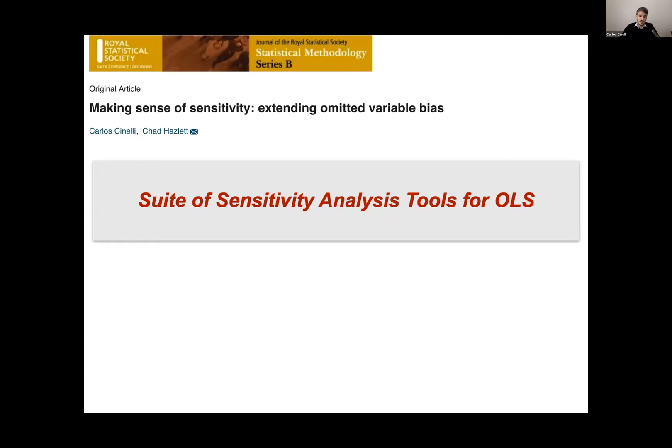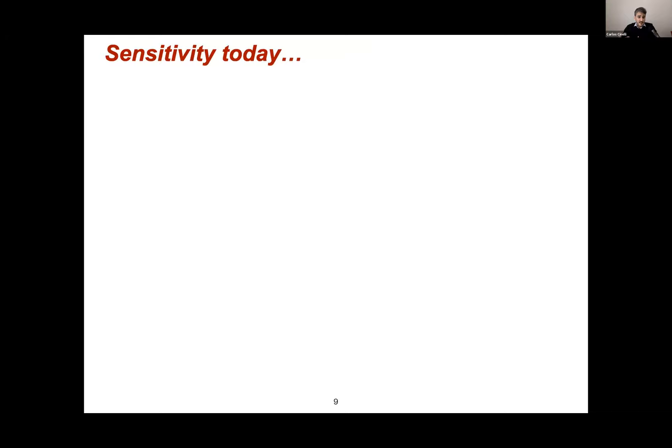Let's get started on the papers. I'm going to discuss a suite of sensitivity analysis tools for ordinary least squares. This is based on the paper with Chad Hazlett, called 'Making Sense of Sensitivity: Extended Omitted Variable Bias,' published last year in JRSS-B. Before diving into the details, let me give a brief overview of the current state of sensitivity analysis for unobserved confounding.